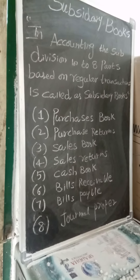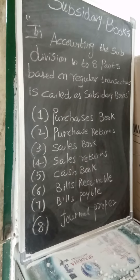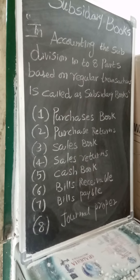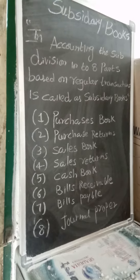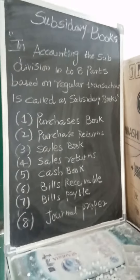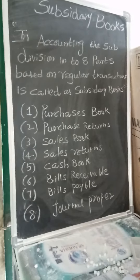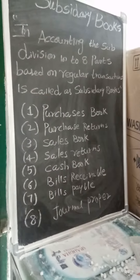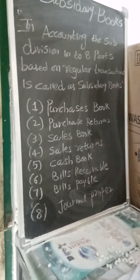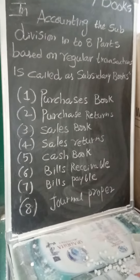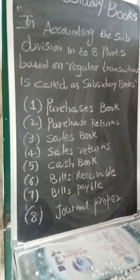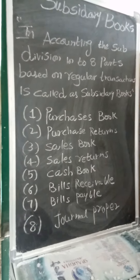There are three cash books: simple cash book, two-column, and three-column cash book, and petty cash book. Among these, petty cash book is more important after the three-column cash book. Cash account is a real account.